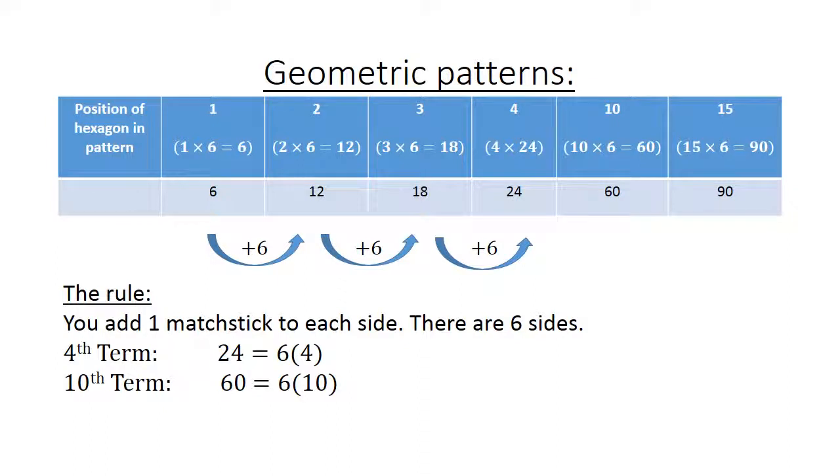So the 4th term is 24, equals 6 times 4. The 10th one is 60, equals 6 times 10. And the formula will be: the nth term will be 6 times n.